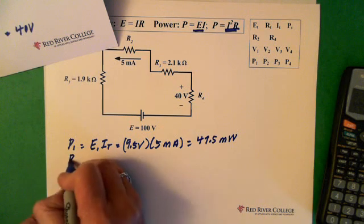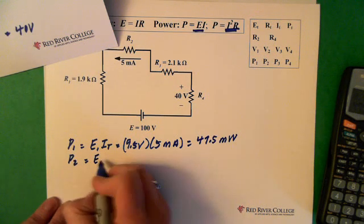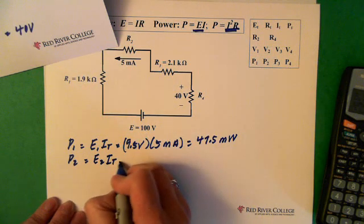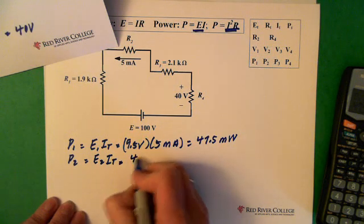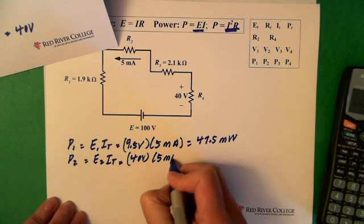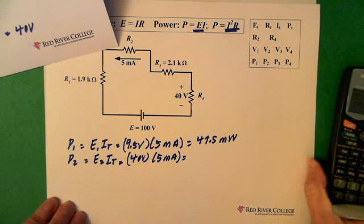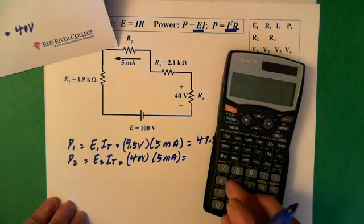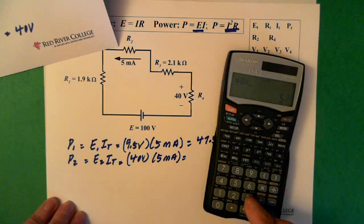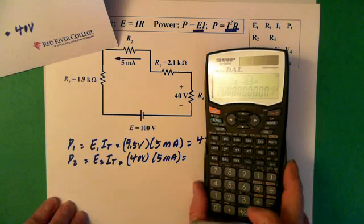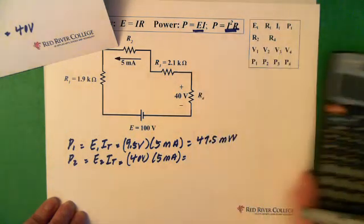Power 2, voltage across resistor 2 times the total current, and that was 40 volts times 5 milliamps. 40 times 5 milliamps, we've got it in memory. And we have 200 milliwatts.